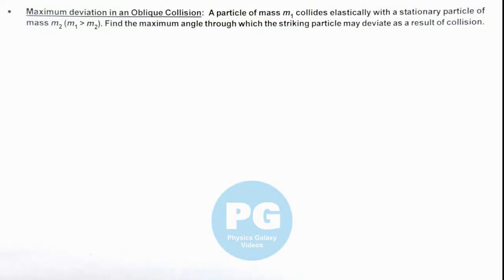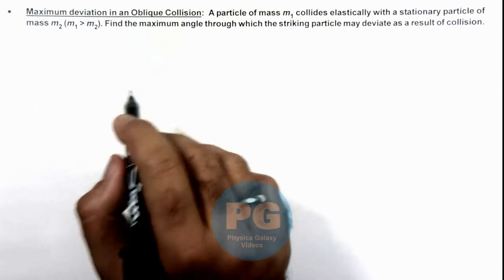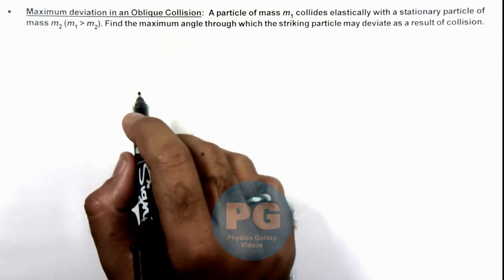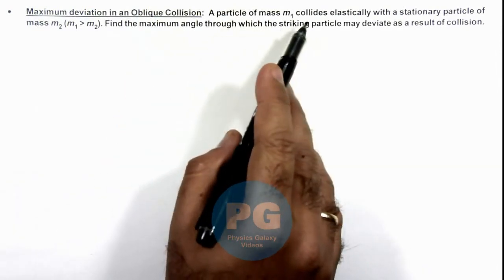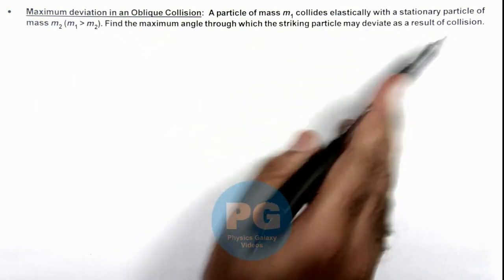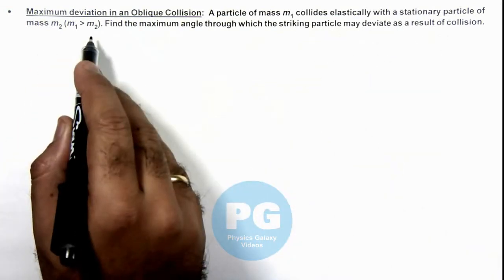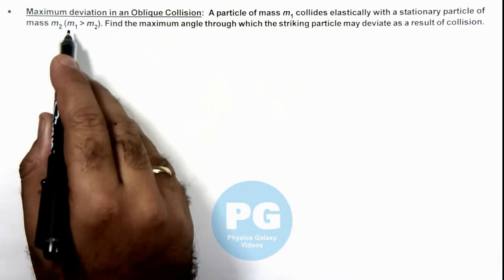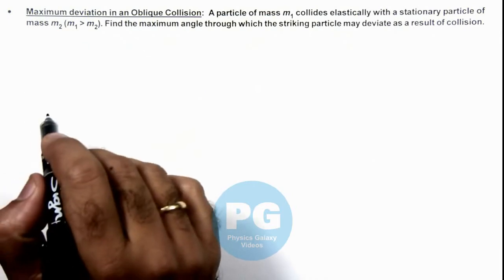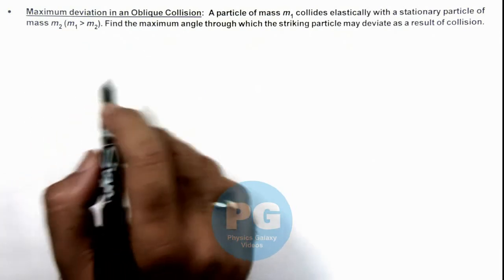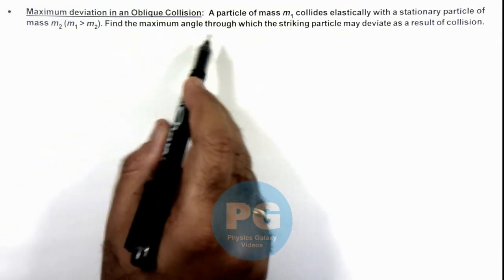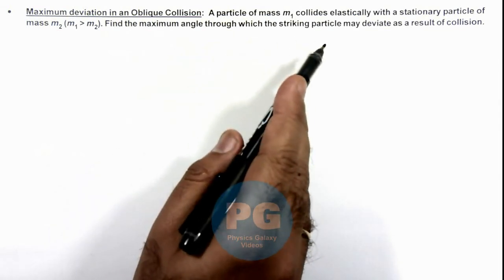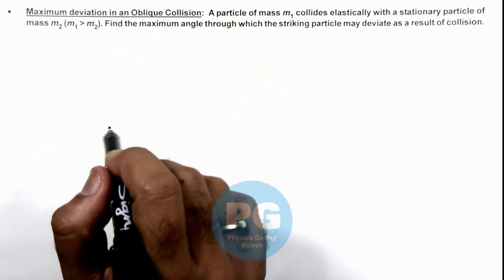In this illustration we'll analyze the maximum deviation in an oblique collision. We are given that a particle of mass m₁ collides elastically with a stationary particle of mass m₂, where m₁ is greater than m₂. We are required to find the maximum angle through which the striking particle may deviate as a result of the collision.